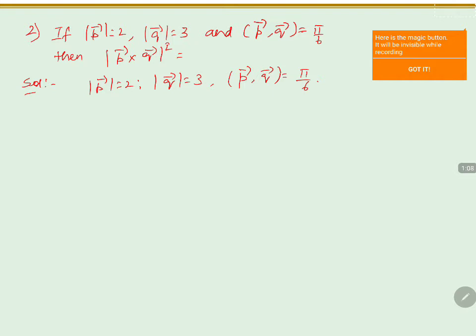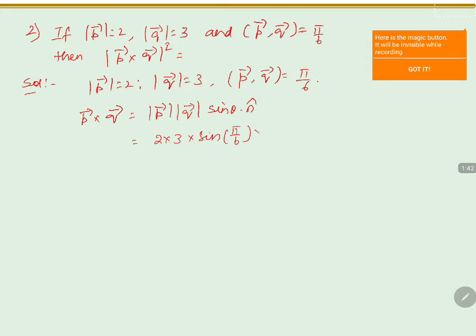Before evaluating the magnitude of P cross Q whole square, we write the formula for P vector cross Q vector. This equals magnitude of P into magnitude of Q into sin(theta) into n̂. Substituting: magnitude of P is 2, magnitude of Q is 3, and theta is 5π/6.